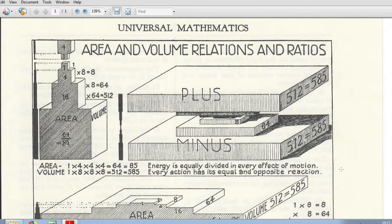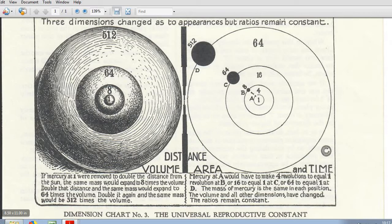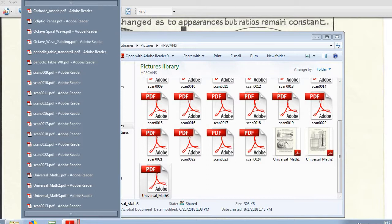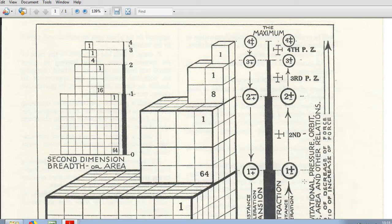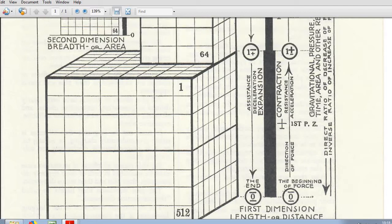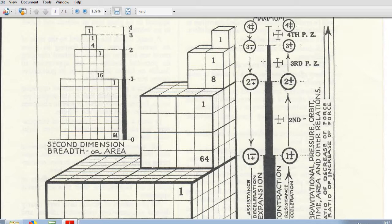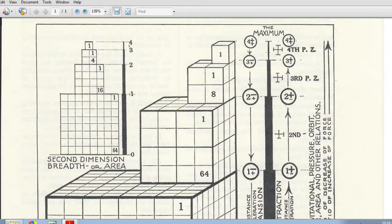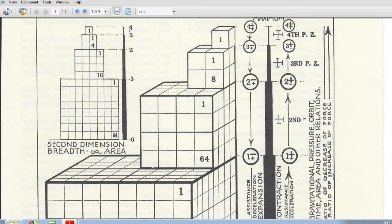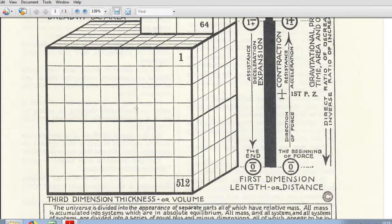This is one view of universal mathematics. This is another view. So you get the first dimension which is length of the first pressure zone, okay length or distance. All right, I'll go 8, 4, 2, 1. So this is the fourth pressure zone, third, second, and first. So you've got the length of the first pressure zone would be this and then the length of the second pressure zone would be that. And then the second one would be breadth or dimension and so you've got 64, 16, 4, 1 and then volume. So the third dimension which would be volume or thickness which is 512 down to 64 and dividing by 8 all the way down.